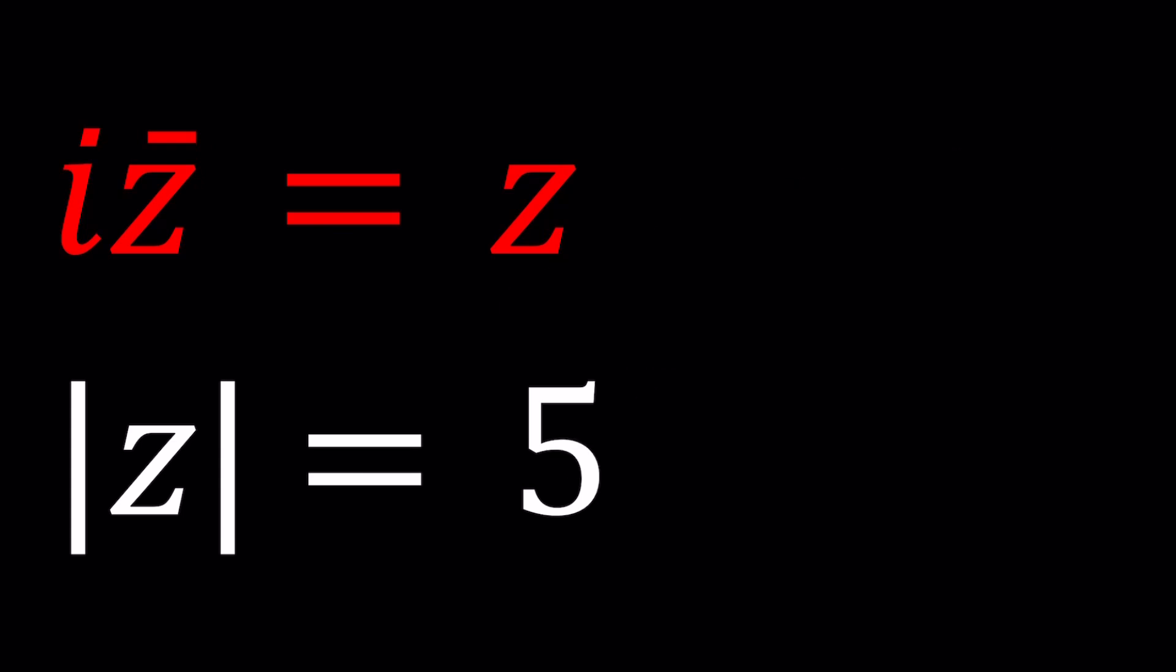But the original problem says a function f is defined by f of z equals i times z bar, where i is the square root of negative one and z bar is the complex conjugate. Let's go ahead and take a look at how we can solve this problem. We've done similar problems before, and we used a method that was pretty much standard. And that was replacing z with a plus bi.